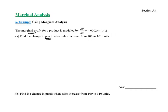It wants to find the change in profit when sales increase from 100 to 101 units. In general, we would find profit of 101 units minus profit of 100 units — plug in 101, plug in 100, then subtract. We can simplify this by setting it up as a definite integral from 100 to 101 of the marginal profit: negative 0.0002x plus 14.2 dx.